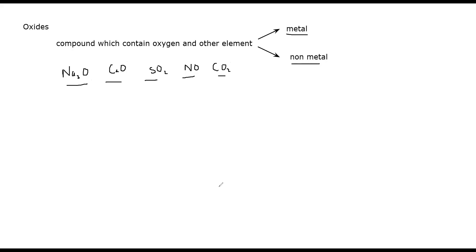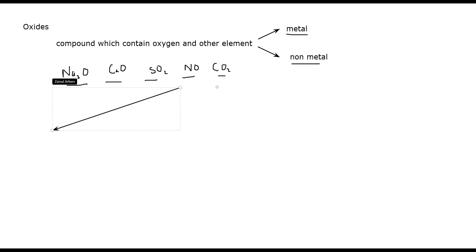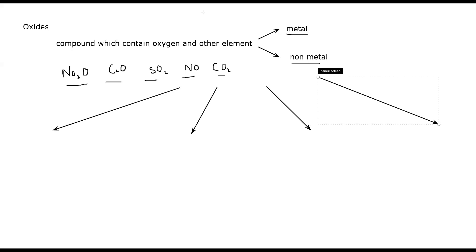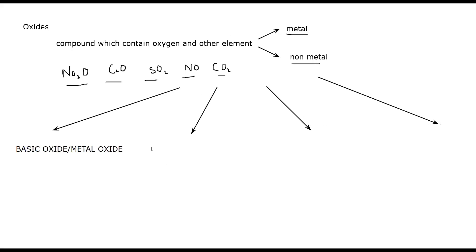It's not fixed that only a metal will be there — it can be metal or non-metal. So elements combined with oxygen are known as oxides. These oxides are divided into four categories. Some are known as basic oxide, also known as metal oxide. Some are known as acidic oxide, or non-metal oxide.